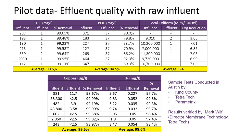The team also examined heavy metals removal by spiking the influent with a copper sulfate solution to assess what removal rates would be seen — an issue of particular concern in the Pacific Northwest. Phosphorus removal was also assessed, as nutrient discharges are a concern in some areas. Across all these constituents, the system demonstrated excellent treatment and removal capabilities with the membrane.